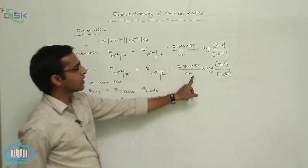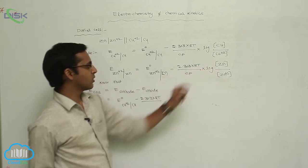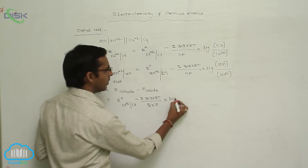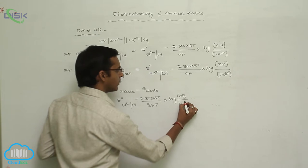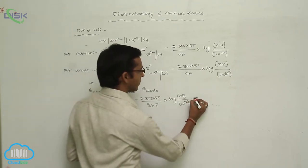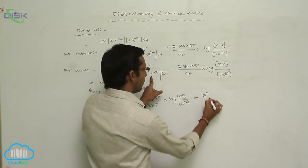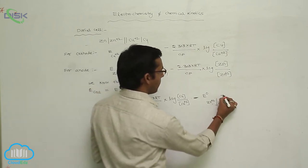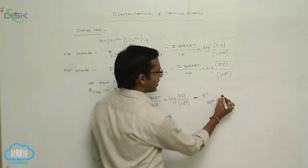Here the number of electrons transferred is 2 — the losing or gaining of electrons equals 2. So N equals 2 into F into log — concentration of copper metal over concentration of Cu²⁺ solution, minus E_anode which is E⁰ for Zn²⁺ vertical line Zn.